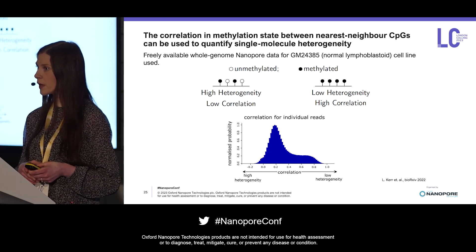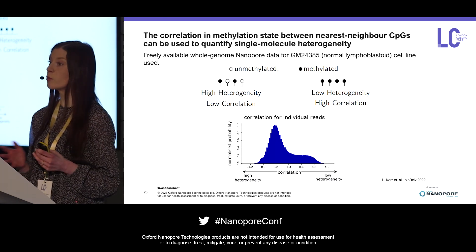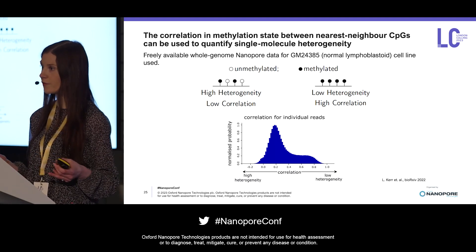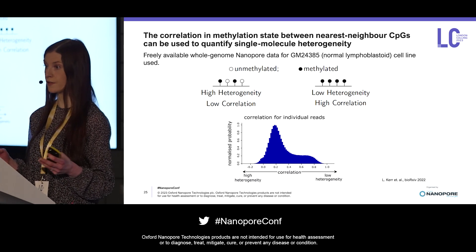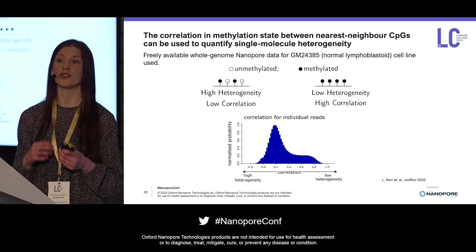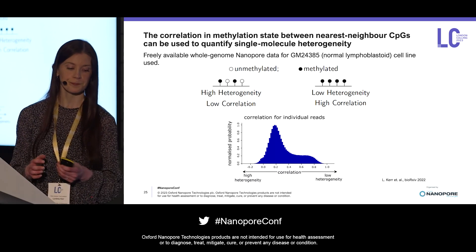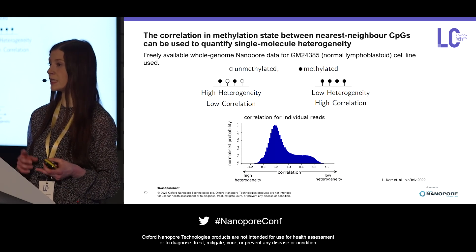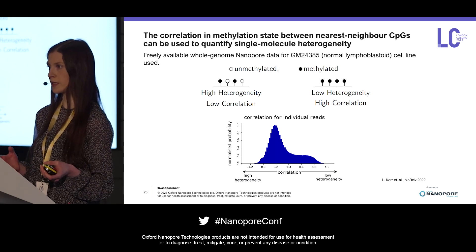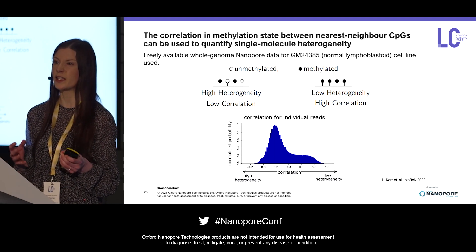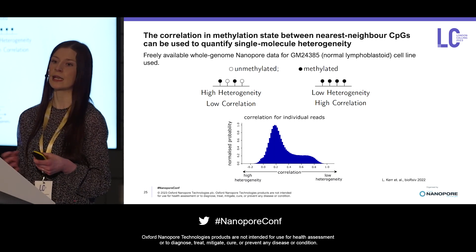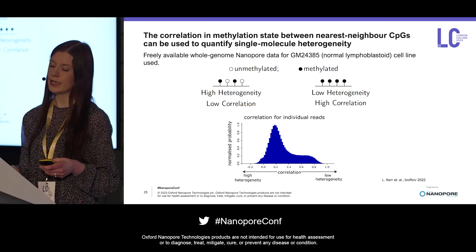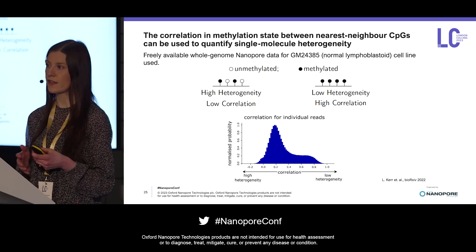To make headway in answering these questions, I've been using a dataset that Nanopore have made freely available — the GM24385 cell line, a normal lymphoblastoid cell line with whole genome data available, allowing us to look at single molecule patterns genome-wide. Because I'm interested in assessing heterogeneity and disorder within single molecule patterns, I need a measure of single molecule heterogeneity — a way to quantify how heterogeneous a region is.